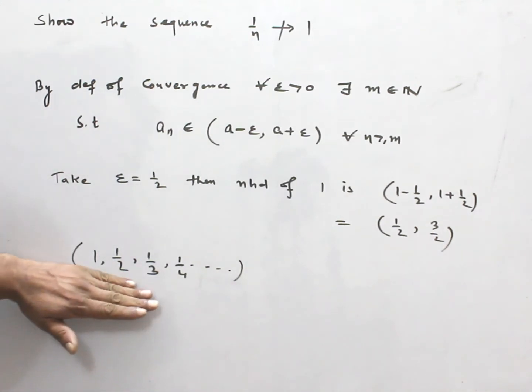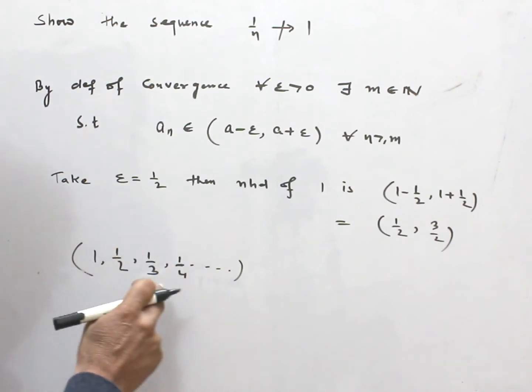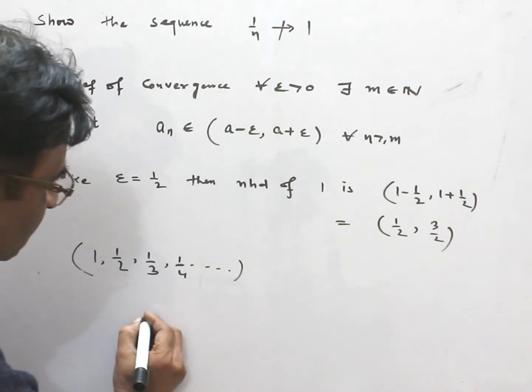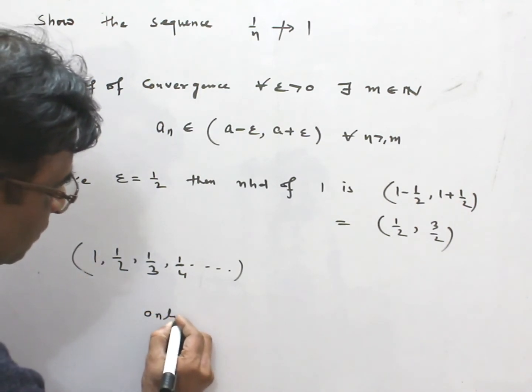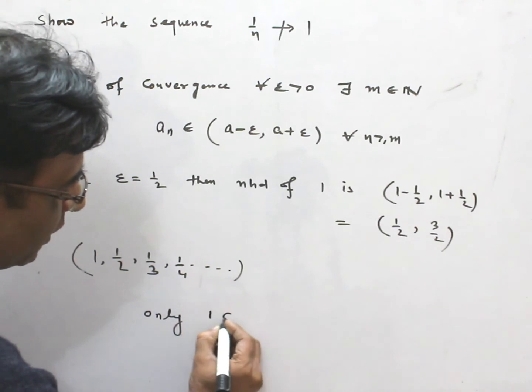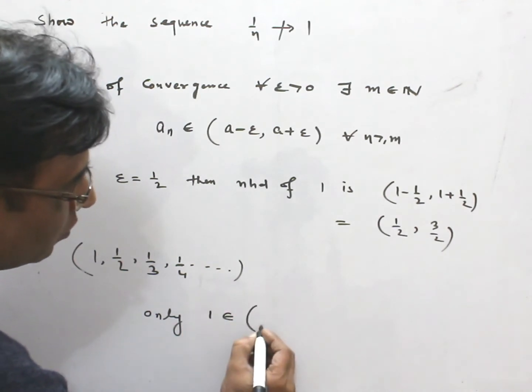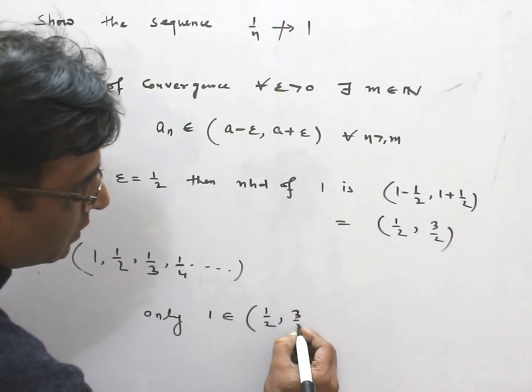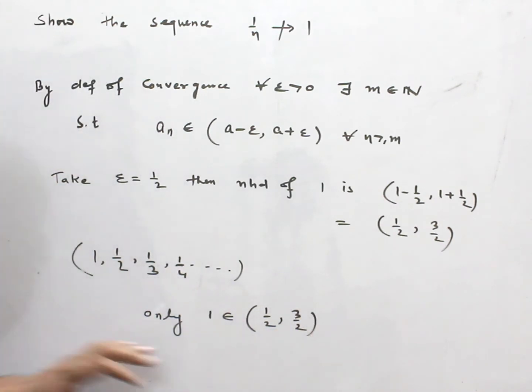terms of this sequence, how many terms of this sequence fall in this neighborhood? Only 1 belongs to this neighborhood of 1.